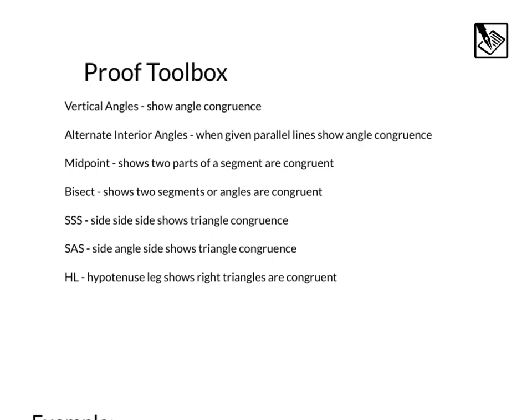Before we dive into a couple example proofs, let's see what we can add to our proof toolbox. First off is vertical angles. We know that this shows two angles are congruent. Alternate interior angles: when we have parallel lines, we know that alternate interior angles are also congruent.